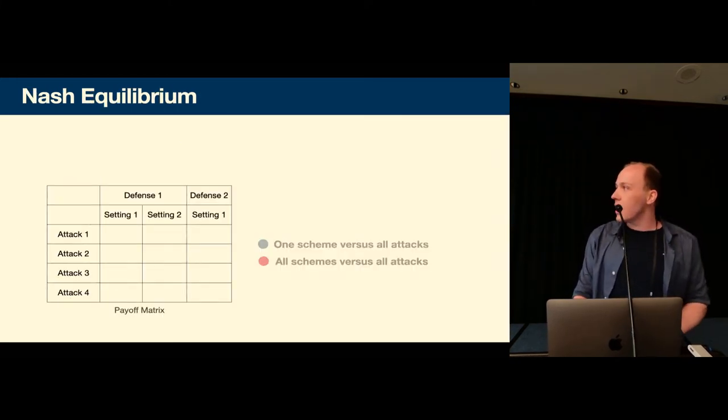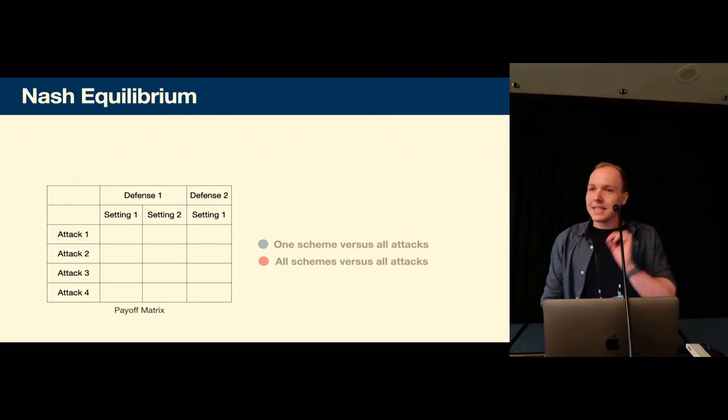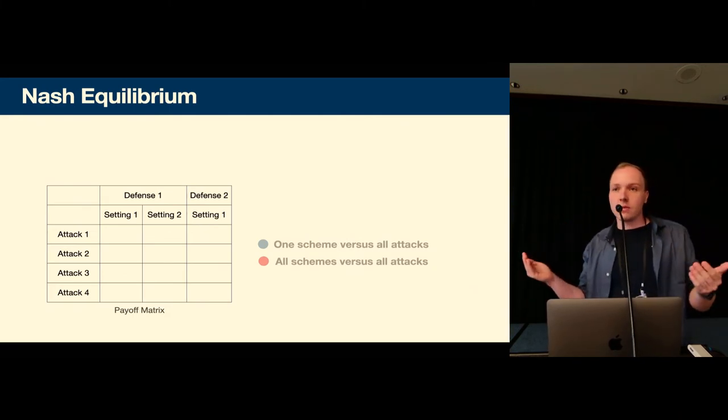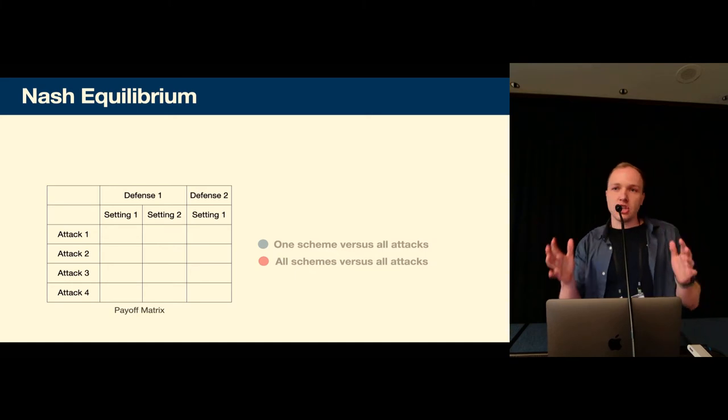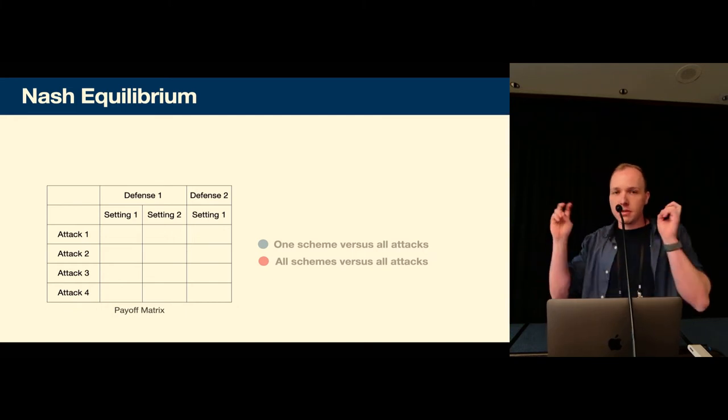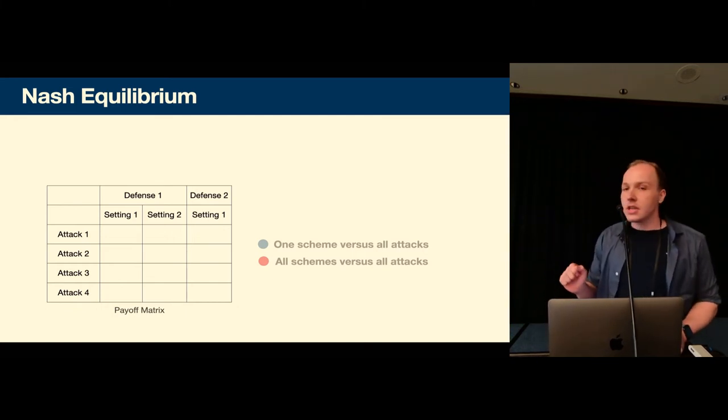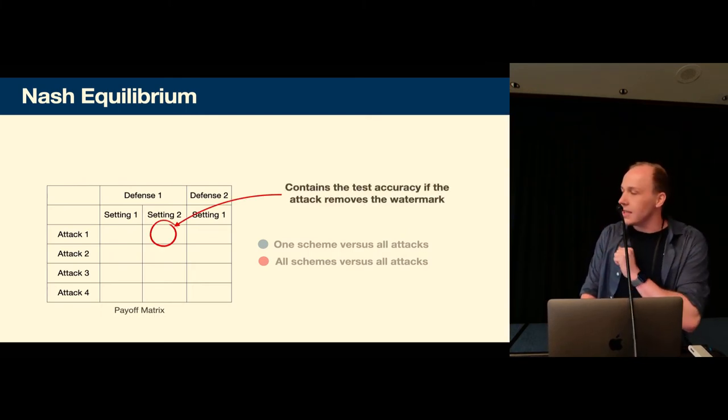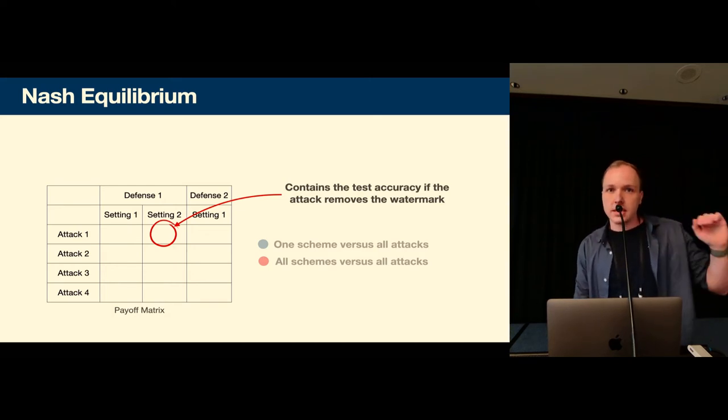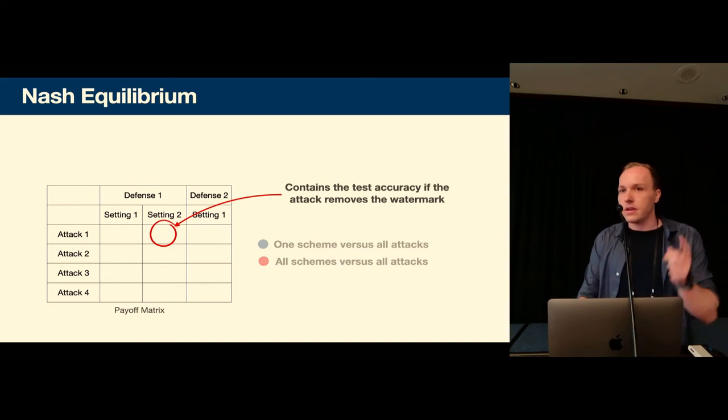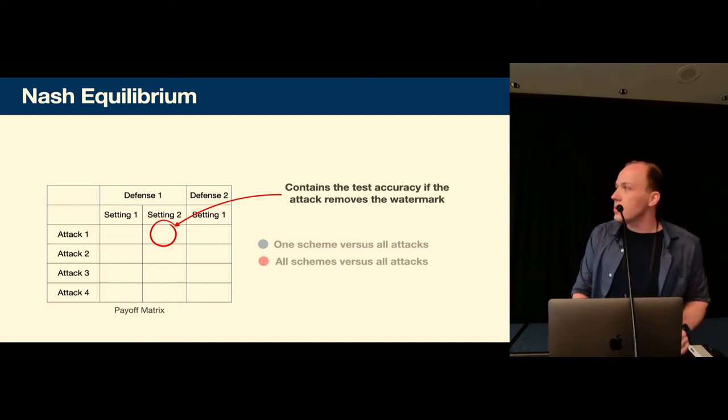Okay the second question that we need to answer is what setting for the defender and what setting for the attacker do we boil robustness down to. So a defender for example can instantiate a watermark with different parameters. Now what if one set of parameters leads to a different optimal strategy for the attacker. So this is where the Nash equilibrium comes in. So we designed a payoff matrix where we write the test accuracy for successful attacks so attacks that remove the watermark and otherwise we rewrite minus infinity and then we compute the Nash equilibrium for the attacker and the defender which is their optimal strategies.